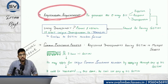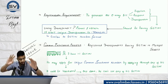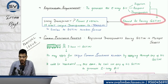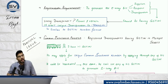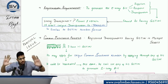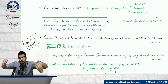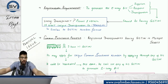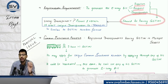Registration requirement: whoever is generating EWB01 — whenever movement of goods is involved — three types of persons come: supplier, recipient, and transporter. To generate EWB01 you need to be registered. Just like you need a PAN number for income tax returns, for e-way bill you need a GSTN. Supplier, recipient, and transporter — all need to have a GSTN.